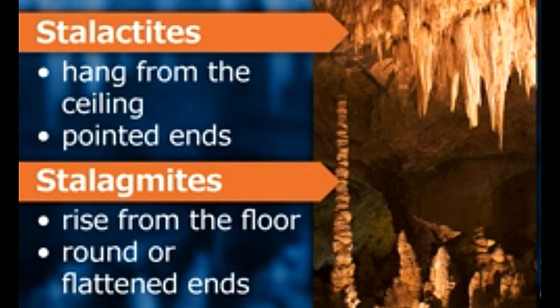Both stalactites and stalagmites are collectively referred to as drip stones and belong to a wide category of cave formations technically referred to as speleothems. A speleothem is a cave formation which results from moving water containing limestone, calcium carbonate, or other types of minerals. Hence these structures are found mostly in limestone or dolomite stone caves.